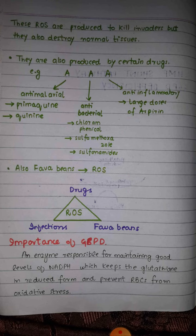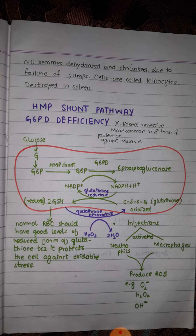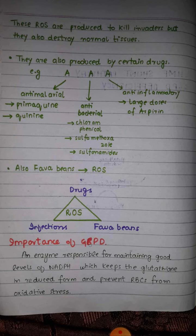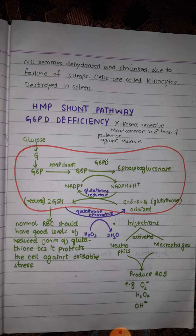These reactive oxygen species cause damage not only to microorganisms but also to our own tissues, so we have protective mechanisms against them. The reduced form of glutathione reacts with hydrogen peroxide and neutralizes it — converting hydrogen peroxide into water — while glutathione itself is converted into its oxidized form by the action of glutathione peroxidase.